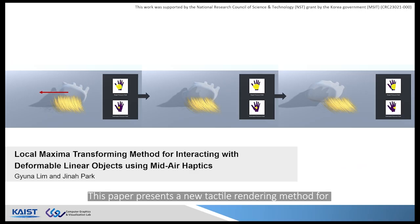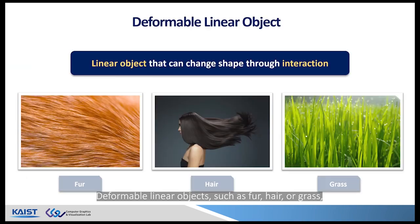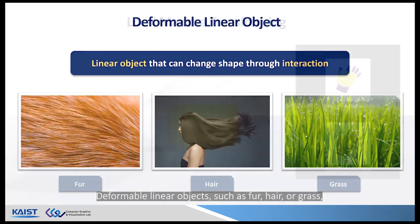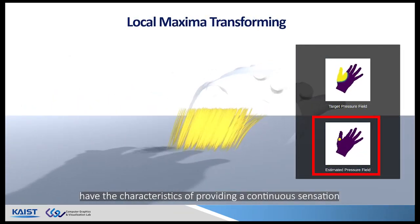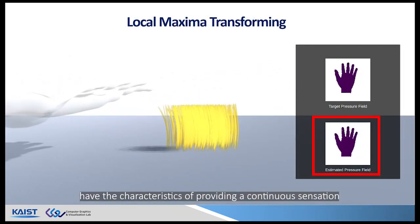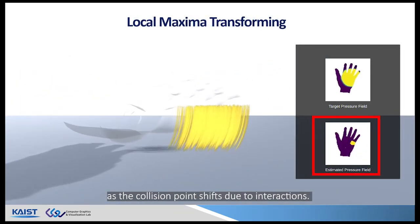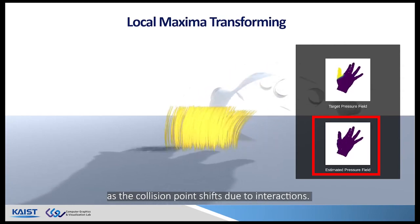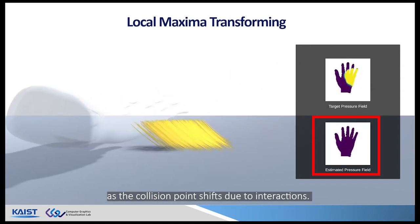This paper presents a new tactile rendering method for interacting with default linear objects using media haptics. Default linear objects, such as fur, hair, or grass, have the characteristics of providing a continuous sensation as the collision point shifts due to interactions.